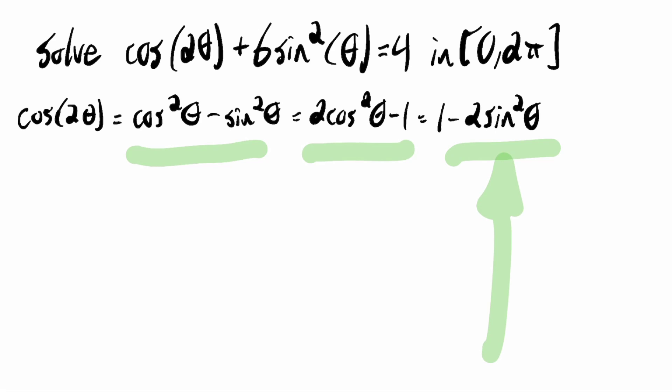The reason being that once we replace this cosine 2 theta with whatever we choose to replace it with, the only thing that will persist from the original equation is this 6 sine squared theta. So if I compare that with more sine squareds of theta, I'll be able to combine like terms. Either of these would work, they would just be inefficient because I would have to use other identities to complete the problem.